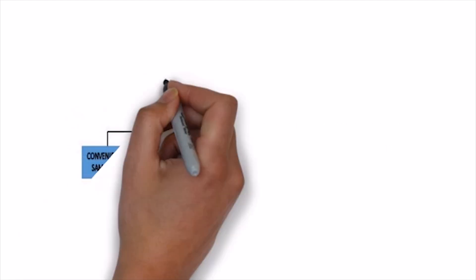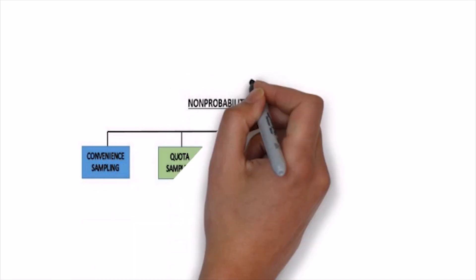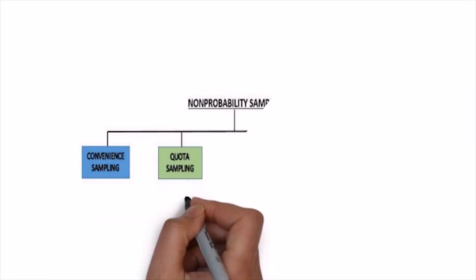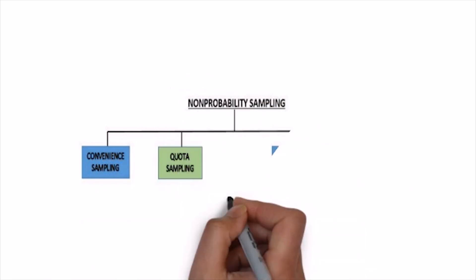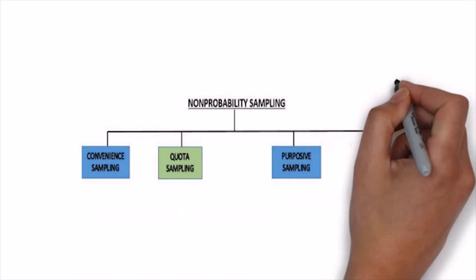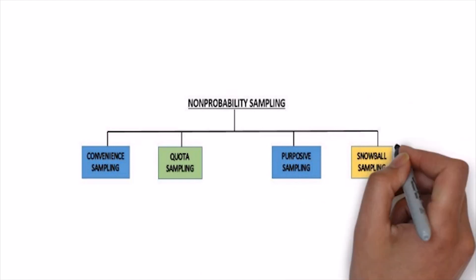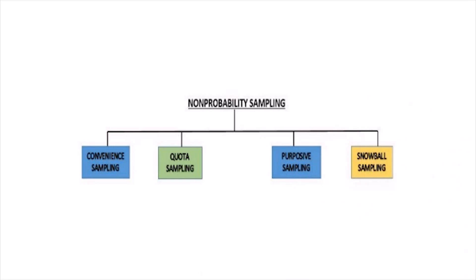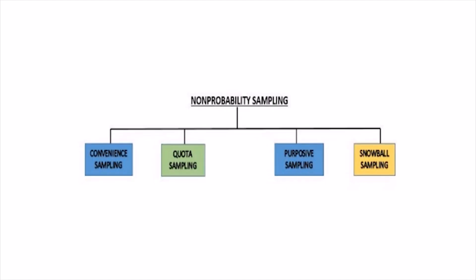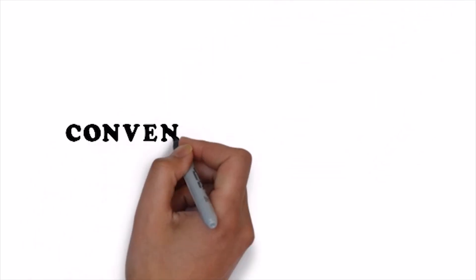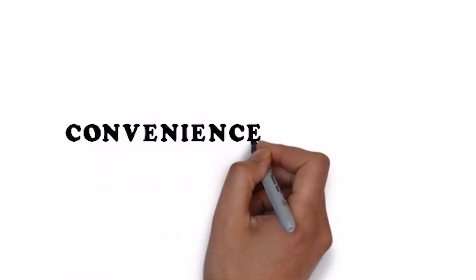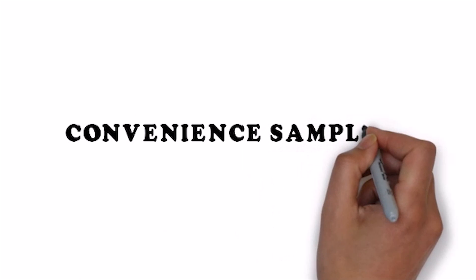Now let's talk about types. There are four types of this technique: first, convenience sampling; second, quota sampling; third, purposive sampling; fourth, snowball sampling. Now coming towards the first type, that is convenience sampling.